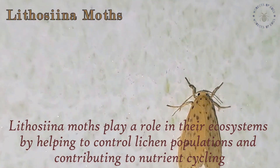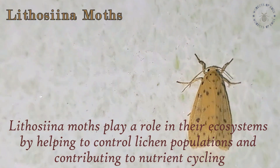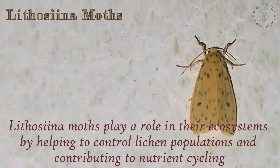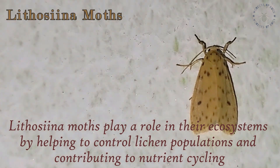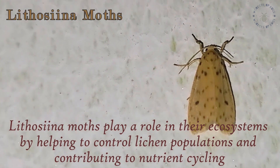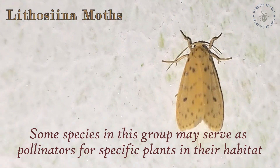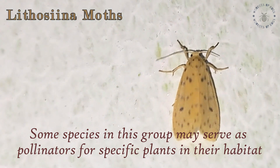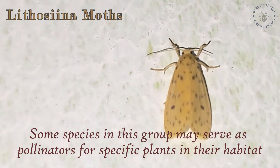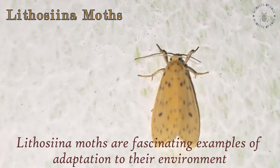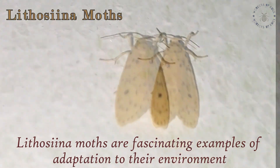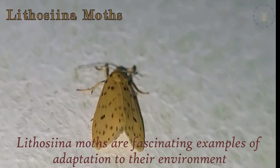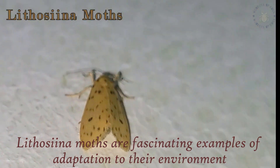Lithosiina moths play a role in their ecosystems by helping to control lichen populations and contributing to nutrient cycling. Some species in this group may serve as pollinators for specific plants in their habitats. Lithosiina moths are fascinating examples of adaptation to their environment.